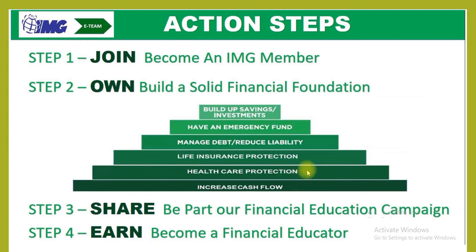Second, build your health care protection because life is uncertain. At least, all your retirement will not be personally bankrupt the moment you have an illness when you get older. Build your long-term health care first before you invest in mutual funds or stocks. Third, life insurance protection — especially if you are a breadwinner, you should have protection, the instant money if something happens to us. Fourth, manage debt and reduce liability. Pay all your debts. That's why you have to increase cash flow and earn additional income. Have an emergency fund — at least 3 to 6 months of income — in case of emergency.